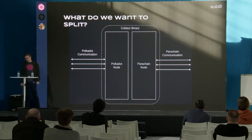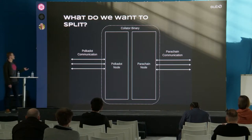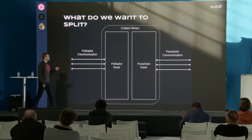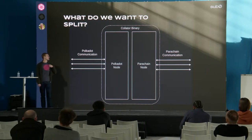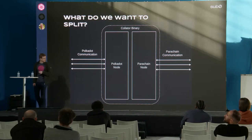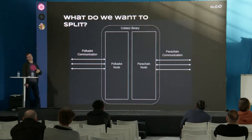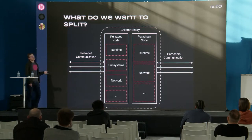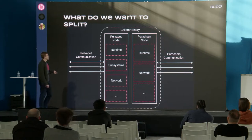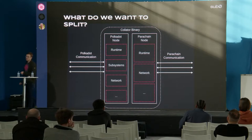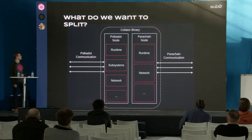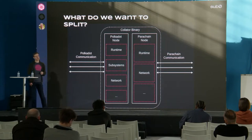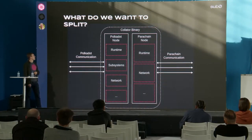What do we actually want to split? As we have seen, the block candidate is sent to Polkadot, but inside the collator binary we not only have the parachain node that is assembling the candidate — we also have a full Polkadot node inside this collator. The parachain node is part of the parachain network communicating to its peers, and the Polkadot node is part of the Polkadot network. Each of these are full Substrate nodes with typical components like the runtime, the network, consensus mechanisms, and in Polkadot we also have subsystems — which are interesting for this talk and we will go into detail later.